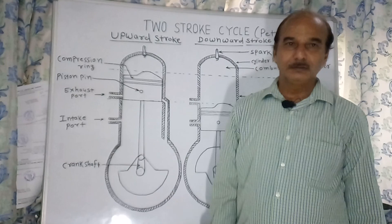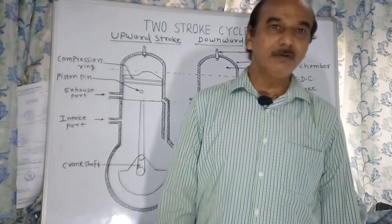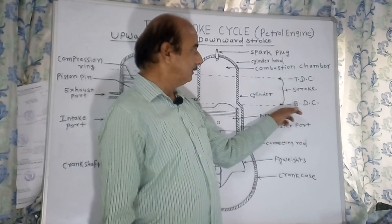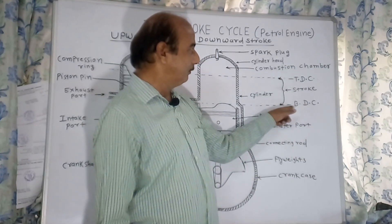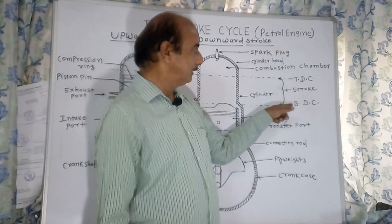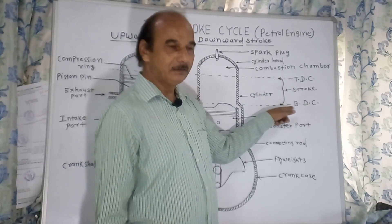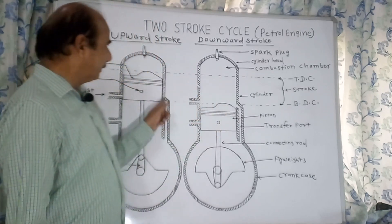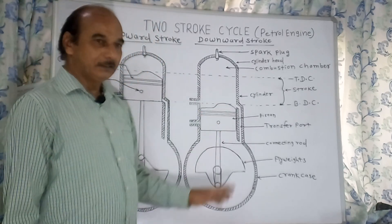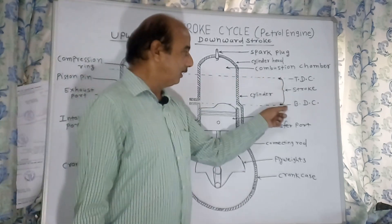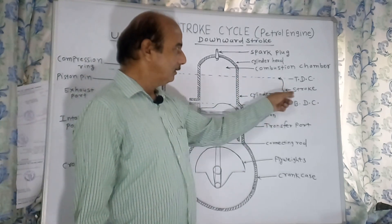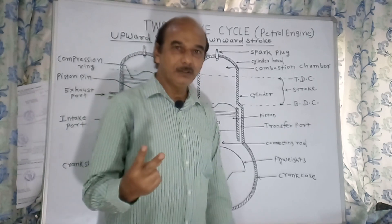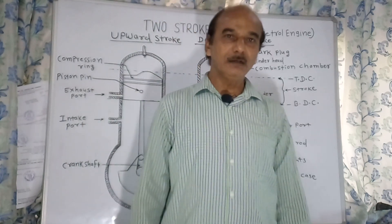TDC is the top dead center and BDC is the bottom dead center. The piston moves from BDC to TDC and from TDC to BDC, and this distance is called the stroke length. There are two strokes only, and within these two strokes, this cycle completes.